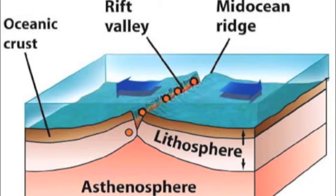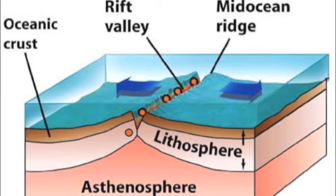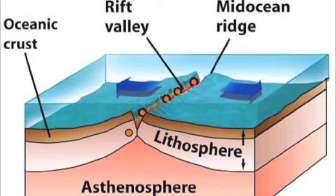Divergent plate boundaries in the ocean are when two oceanic crusts move apart and lava comes to fill the space. This is happening in the Mid-Atlantic Ridge, the East Pacific Rise, and African Rift Valleys.